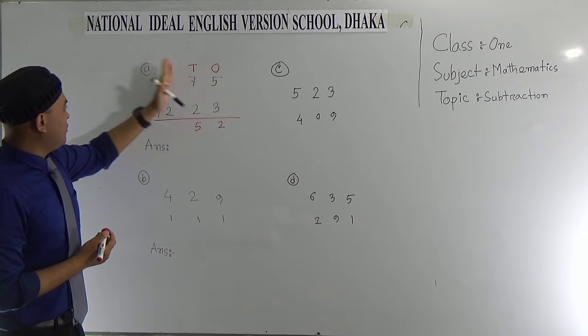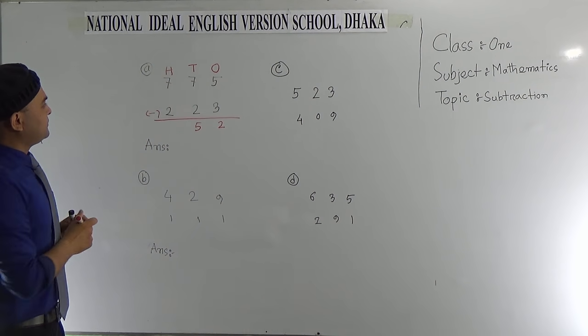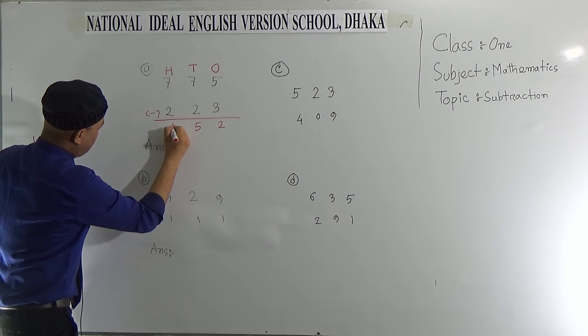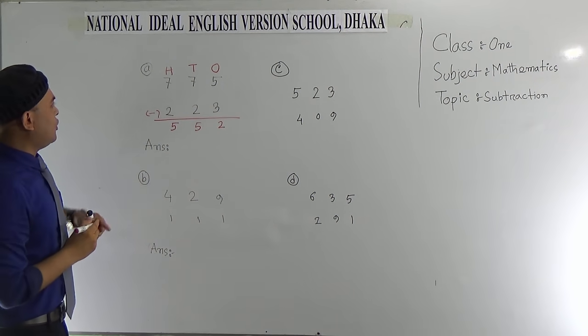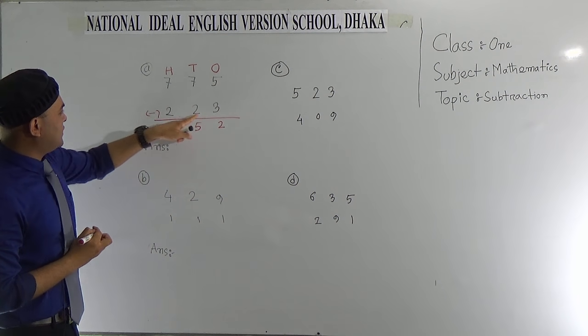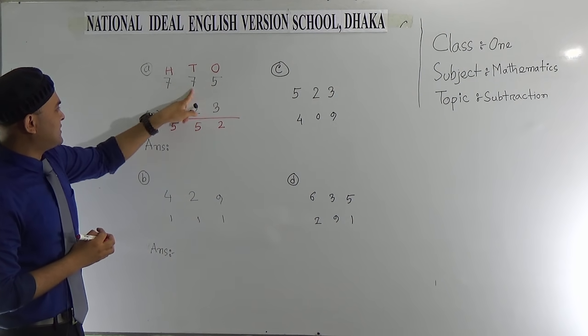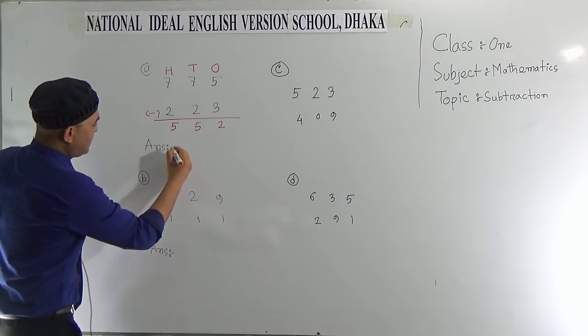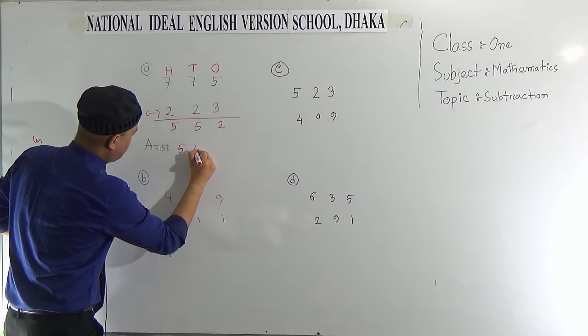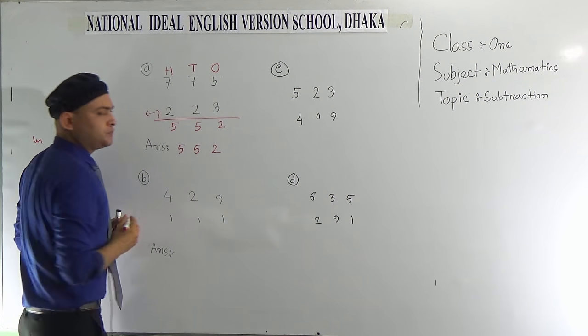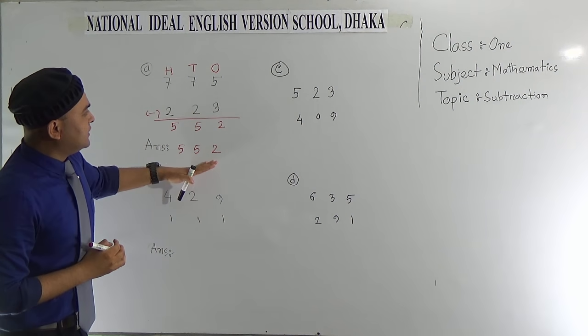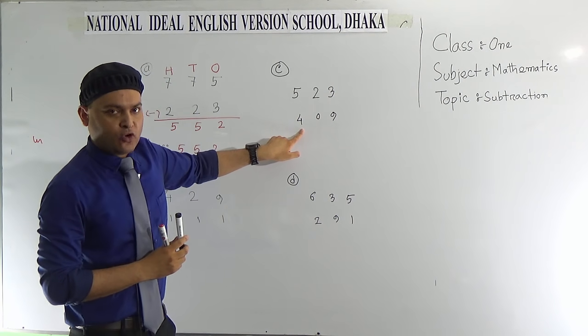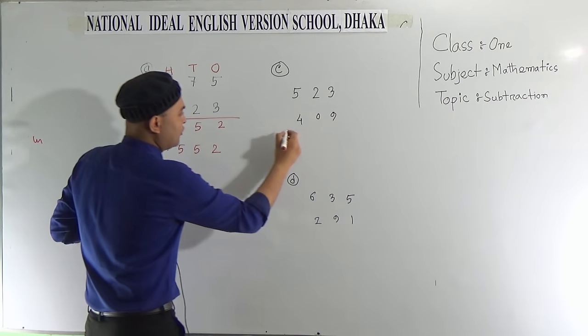Then similarly we can move to the 100's column and subtract 2 from 7. It will be 5. So the subtraction of 223 from 775 is 552. So the answer is 552.